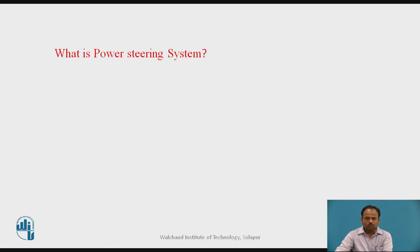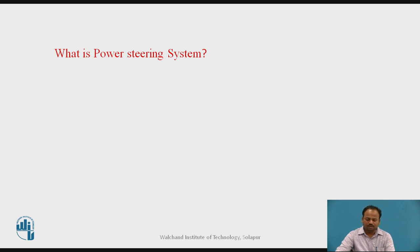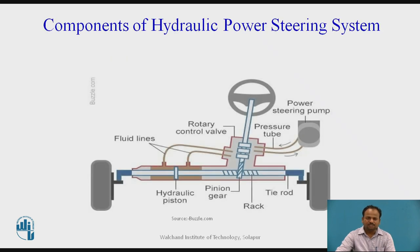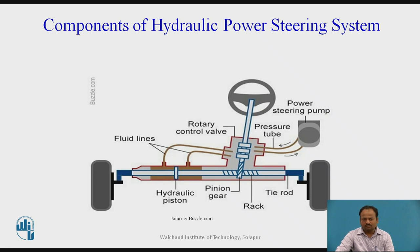A power steering system is a steering system of a vehicle which operates with the help of hydraulic power or electrical power, and which automatically reduces human effort — this is called a Power Steering System. Now we will look at the first type, the Hydraulic Power Steering System, and before going into its details, we will examine its components.